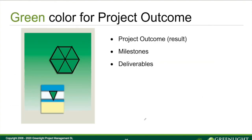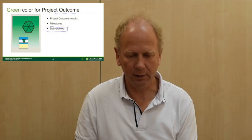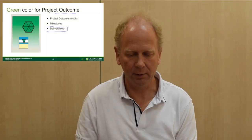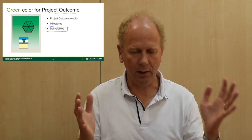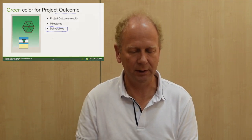Then we have one more color — the green color. The green color represents the result or the project outcome. The project outcome could be the deliverables that we have from the project — any deliverable: software, hardware, services, solutions. If you build a house, the actual house, etc. These are the deliverables out from the project.